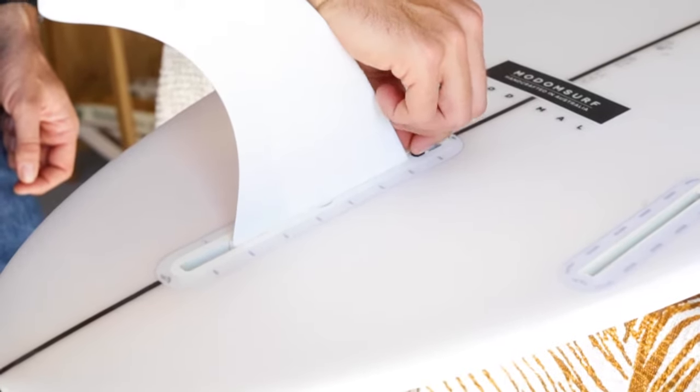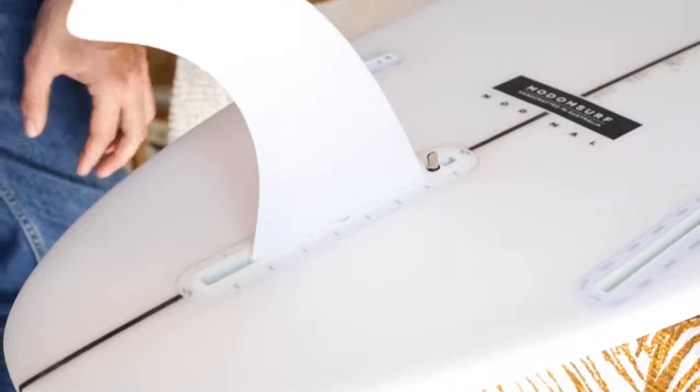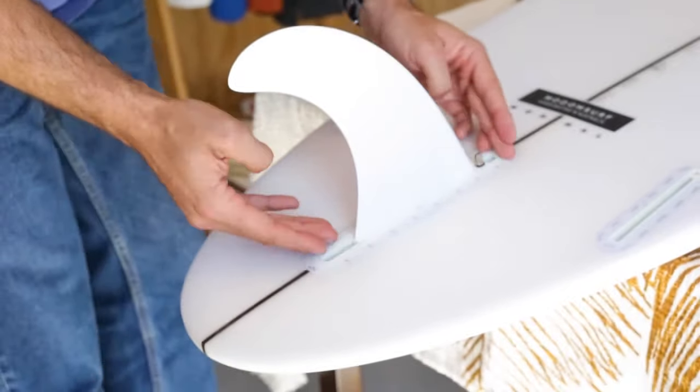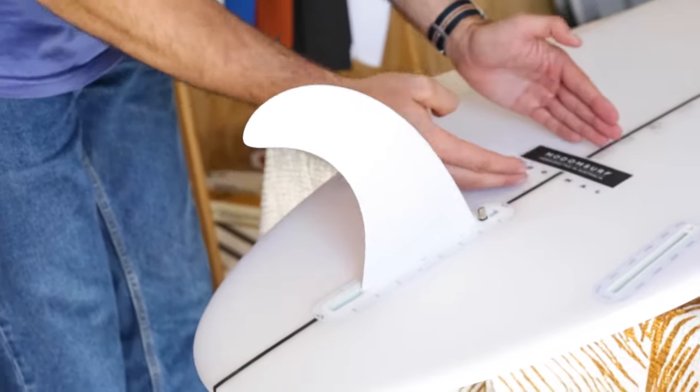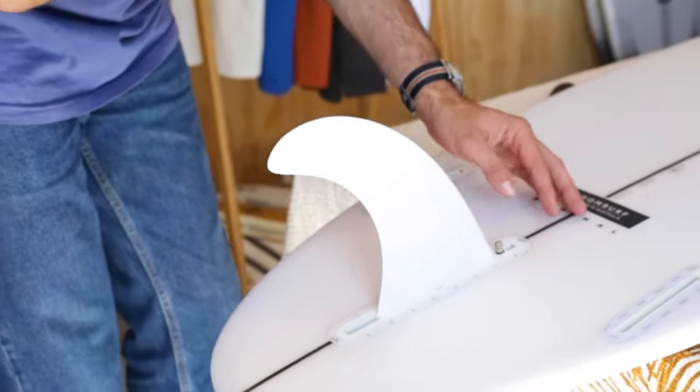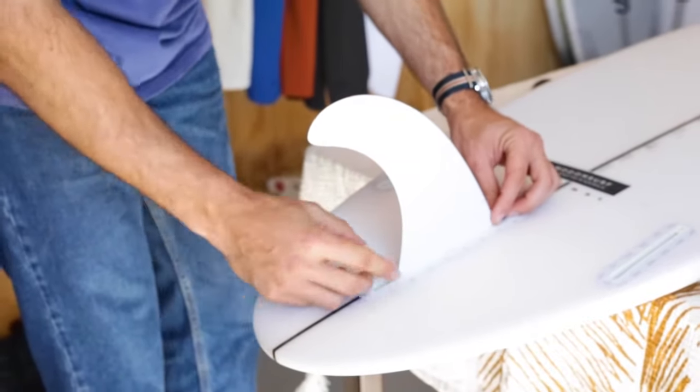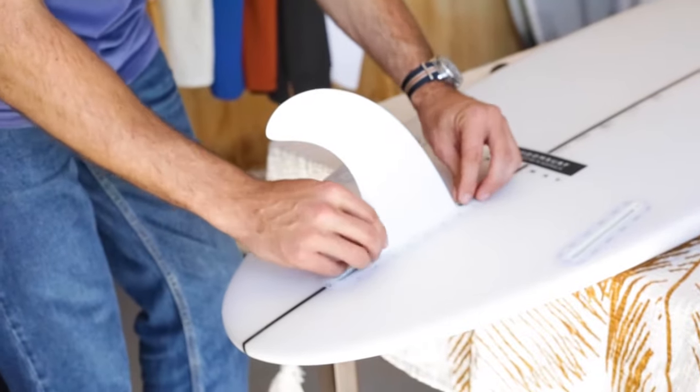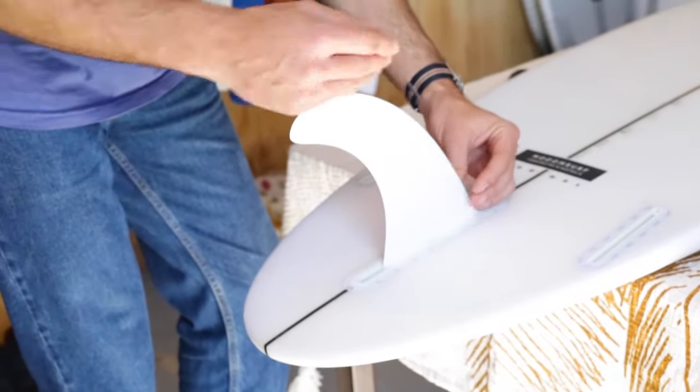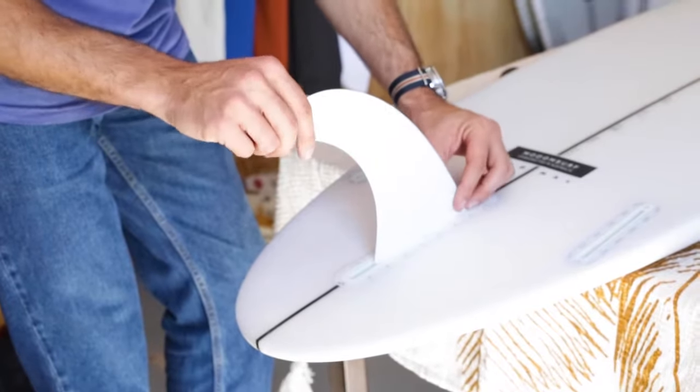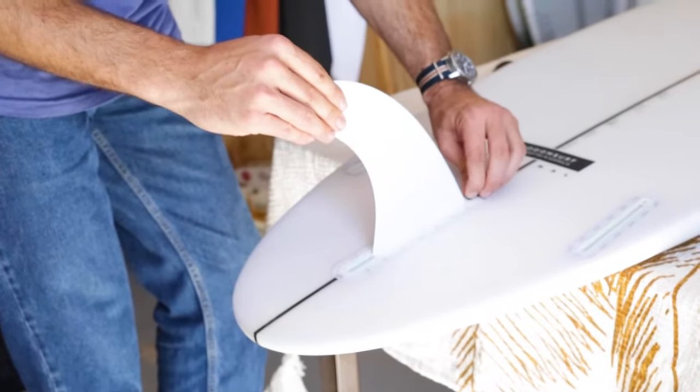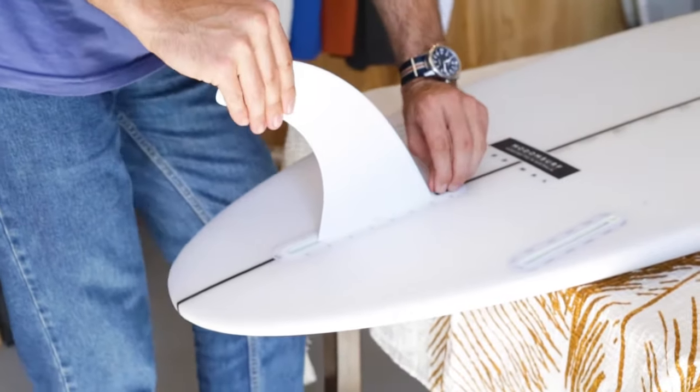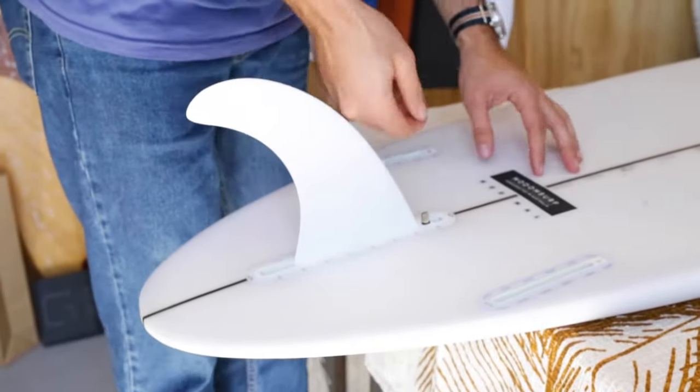Fin placement wise, depending on where you put the fin in the box affects the ability to turn. The more you push the fin forward, the more pivotal the board's going to be. The more you put it back, the more drive you get off the back of the tail and it's not going to be as easy to turn. Depending on the size of the fin and a whole range of different functions - the flex, the construction, and so on - we can touch on that in later videos. Just make sure it's tight and it's all stuck in there and you're good to go.